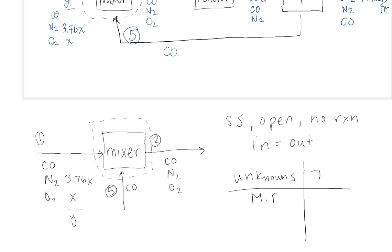Next you want to look at how many mass balances you can perform. So you can do a mass balance for each different species in the system. So there you have carbon monoxide, nitrogen, and oxygen. There are only three species so you can do three mass balances.